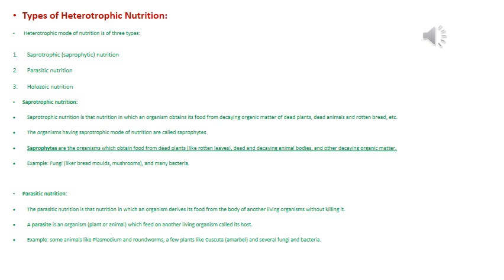Saprotrophs derive nutrition from dead decaying organic matter. Examples include bread mold, Rhizopus, and Monotropa. The next type is parasitic mode of nutrition, which involves two types of organisms: the parasite, which thrives on another organism, and the host. In this mode, an organism derives food from the body of another living organism, causing harm to it — this is known as a host-parasite relationship.